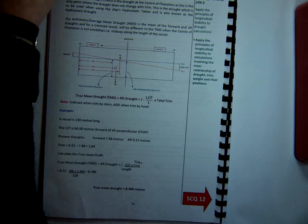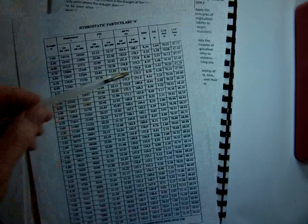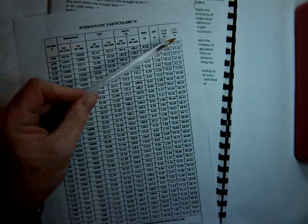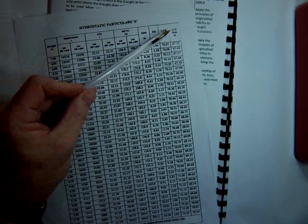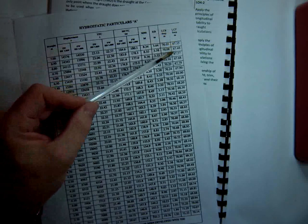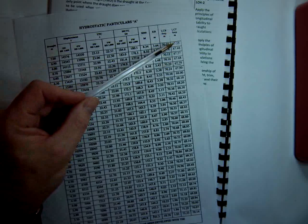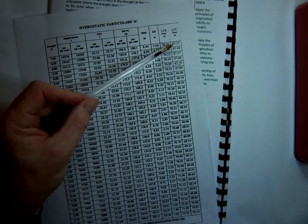It's the centre of gravity of the water plane area as well. And the LCF, you'd get the value from the tables, the hydrostatic particulars. And as we can see here, LCF, and it's measured, when we look at all these values here, these are always measured from the aft perpendicular. So with longitudinal stability, everything is measured from the aft perpendicular.